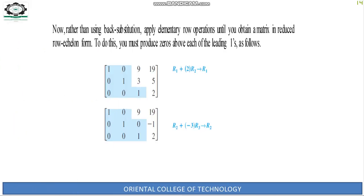Apply R1 → R1 + 2R2 to get: 1, 0, 9, 1; 0, 1, 3, 5; 0, 0, 1, 2.